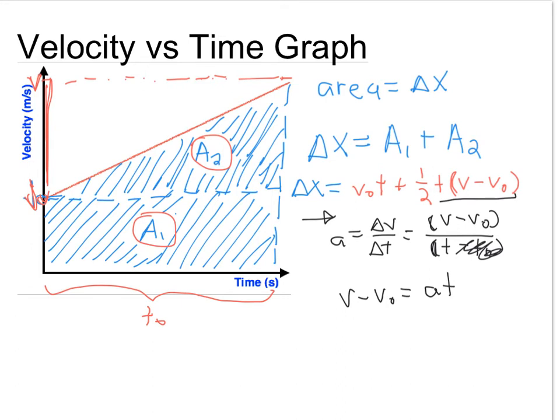Now what I'm going to do is I'm going to substitute V minus V initial in for the V minus V initial up here in red. And I'm going to get this expression here. The change in x is equal to V initial t plus one half t times a t. And I'm going to continue this on the next slide.